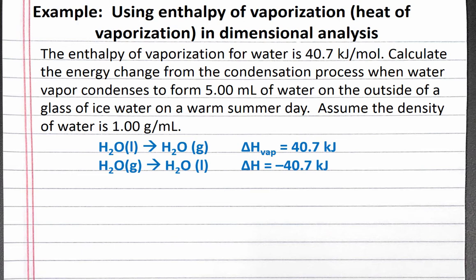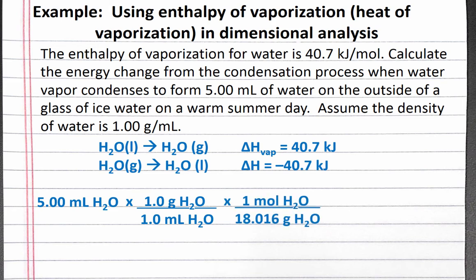We'll start our dimensional analysis with 5 milliliters of H2O. We can use the density to convert between volume and mass. Then we can use the molar mass of H2O to convert between mass and moles of H2O. Finally, we can use the enthalpy change from our equation to convert from moles of H2O to kilojoules.